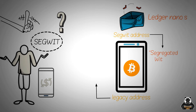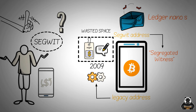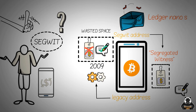SegWit is short for Segregated Witness. Legacy is the original Bitcoin protocol that's been around since 2009. The original protocol bundled the transaction data and the digital signature into one group. The problem with this is that it resulted in a lot of wasted space, because often times the data wouldn't change but the signature would. With SegWit, the data and the signature are segregated, or separated, into two different groups.